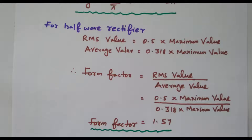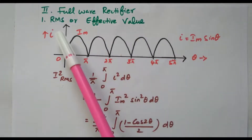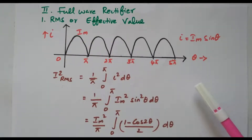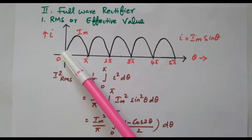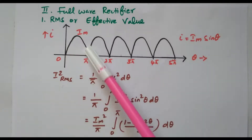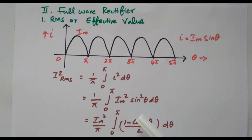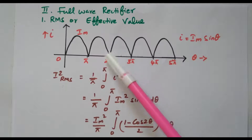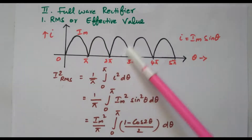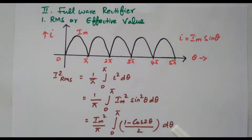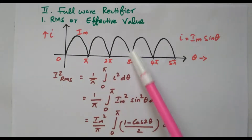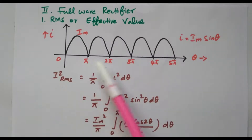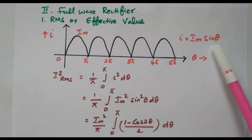Now we will go to the full wave rectifier and see its RMS or effective value. In a full wave rectifier, two or four diodes are available. During the positive half cycle one set of diodes is forward biased, giving positive voltage. During the negative half cycle another set of diodes is forward biased, so current is obtained during the negative half cycle also — both half cycles are rectified. Hence it is called a full wave rectifier.